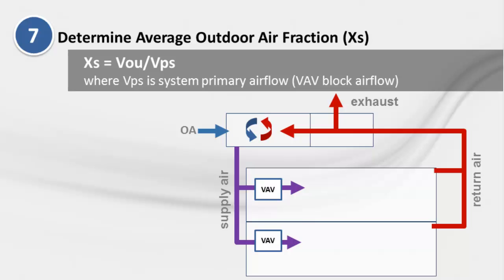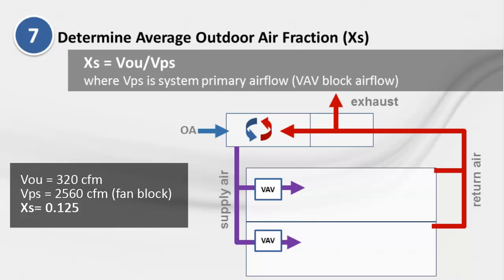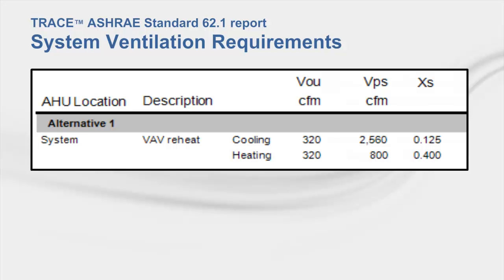Next, the average outdoor air fraction, X sub S, is calculated by dividing the uncorrected outdoor air intake by the system primary air flow, V sub PS, which is the fan design air flow. In TRACE 700, V sub PS is reported as V sub fan on the ASHRAE Standard 62.1 report and is also equal to the main fan air flow found on the system checksums report. The uncorrected outdoor air fraction, X sub S, is shown in the System Ventilation Requirements section of the TRACE 700 report.